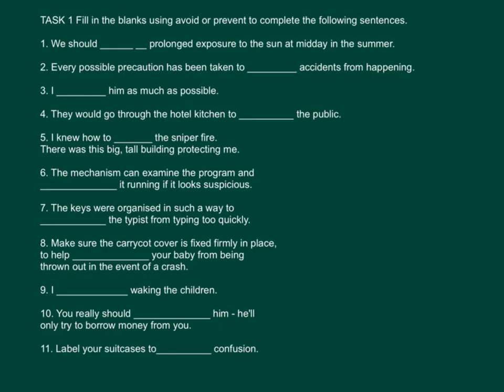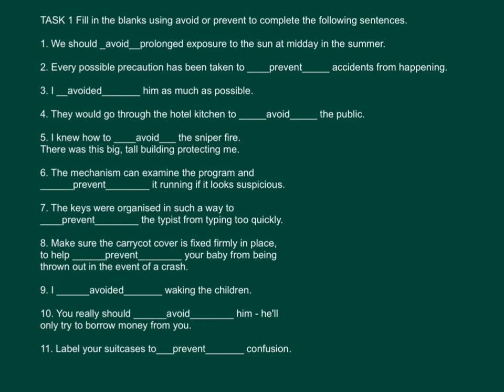Task 1: Fill in the blanks using avoid or prevent to complete the following sentences. You may press pause now and finish the task. Now let's check the answers. Number 1: We should avoid prolonged exposure to the sun at midday in the summer. Number 2: Every possible precaution has been taken to prevent accidents from happening. 各种可能做到的预防措施,我们都已经采取以防意外事故发生。Prevent 是指預防,以及阻止某些事發生。